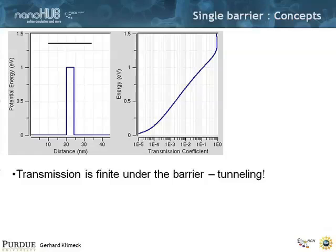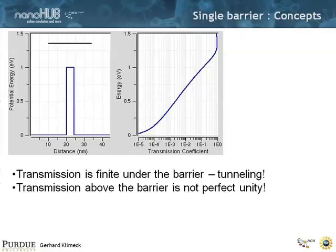Waves can tunnel through barriers. By the way, the reason I can see through my glass, an electromagnetic wave can tunnel through this glass. So tunneling is not all that bizarre. We don't think of it that way in classical particles, but we know waves can tunnel. And then, note again that above the barrier, where transmission should be perfect in terms of classical thinking, it is not perfect.